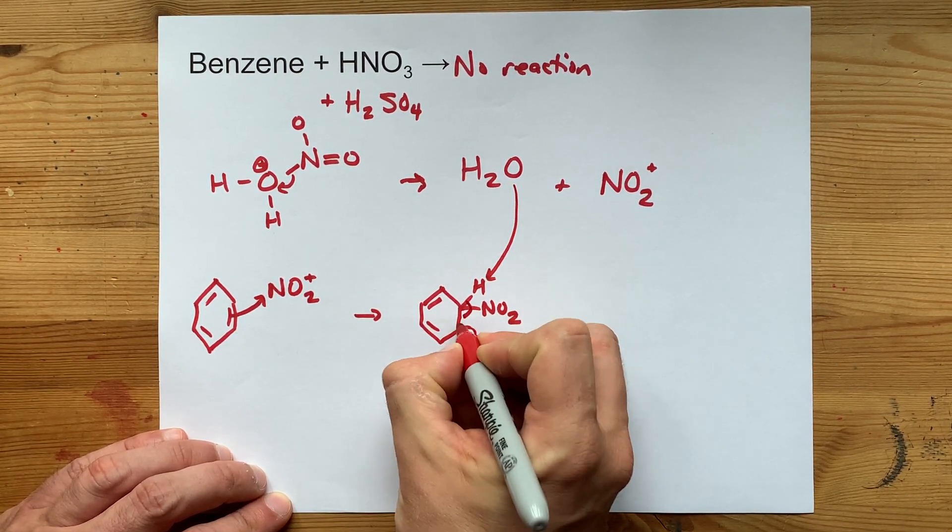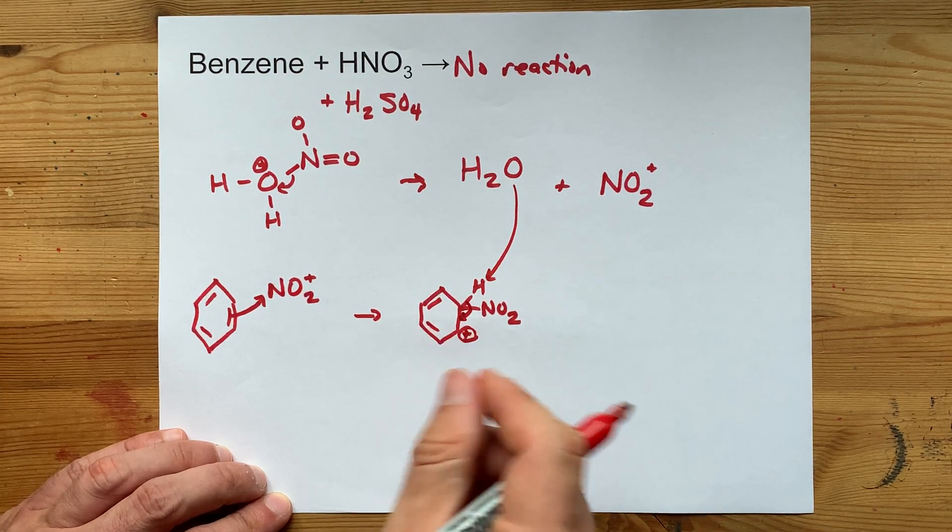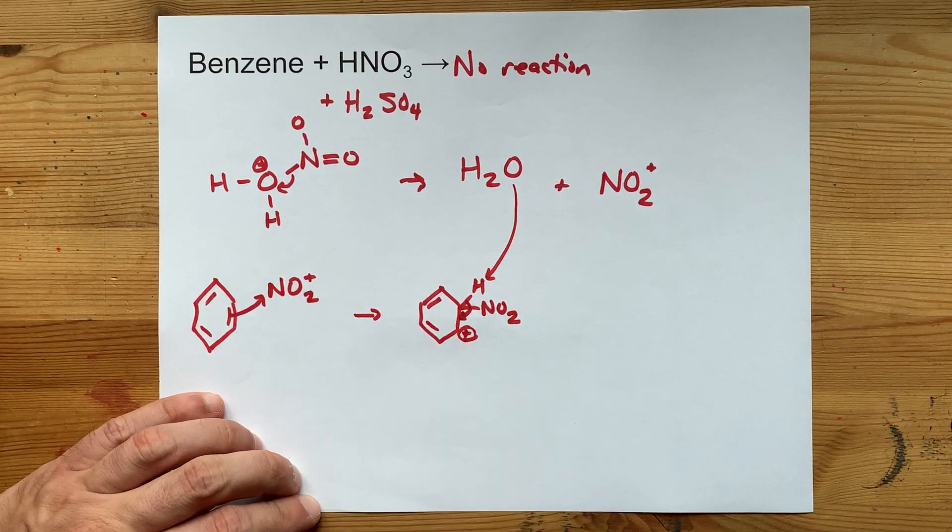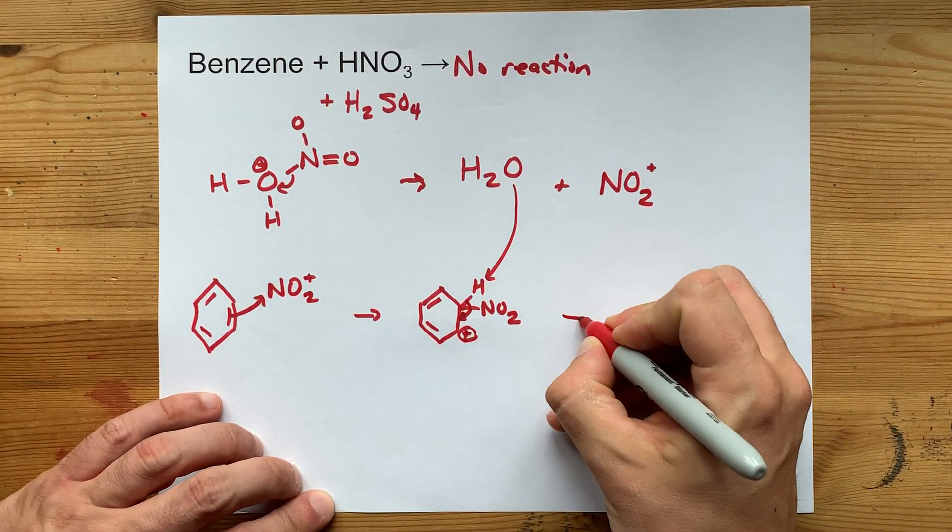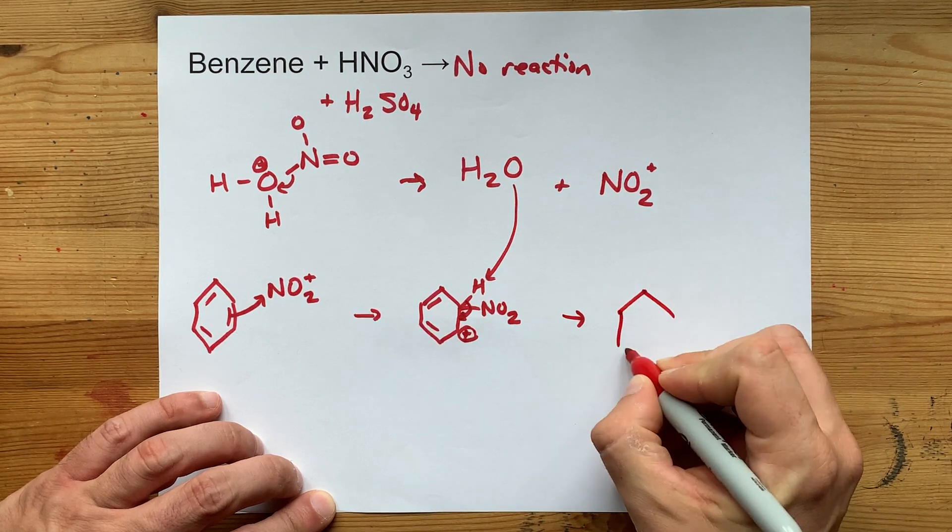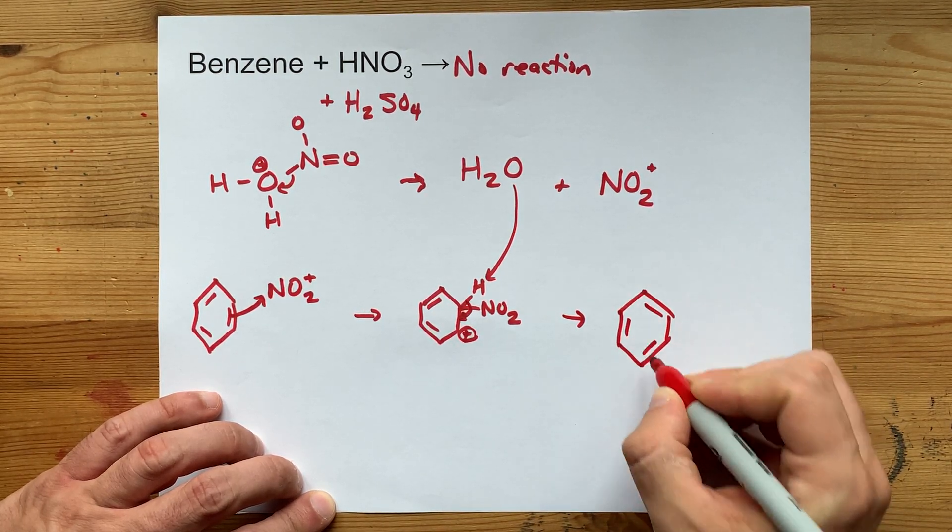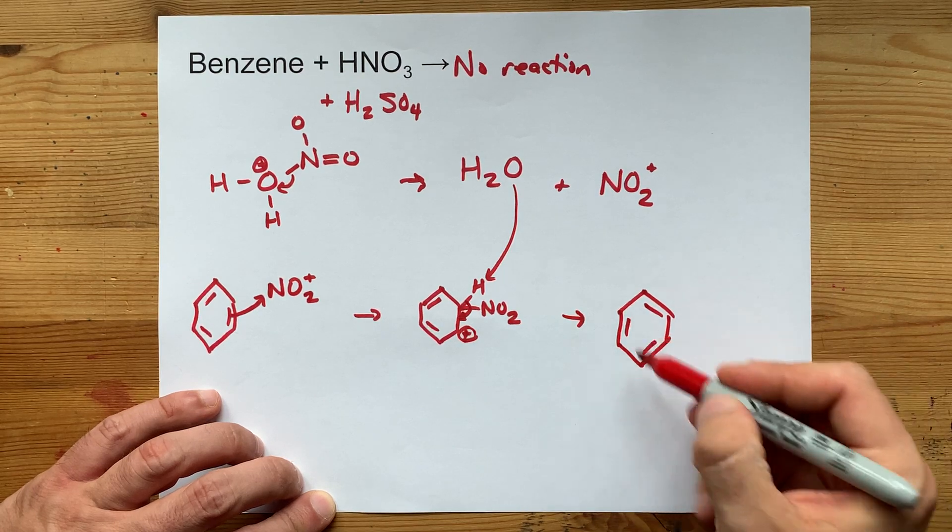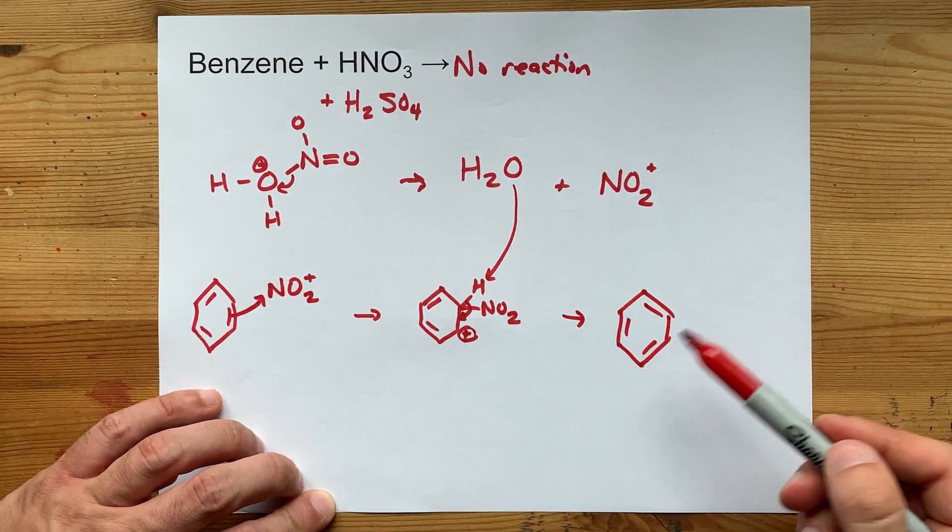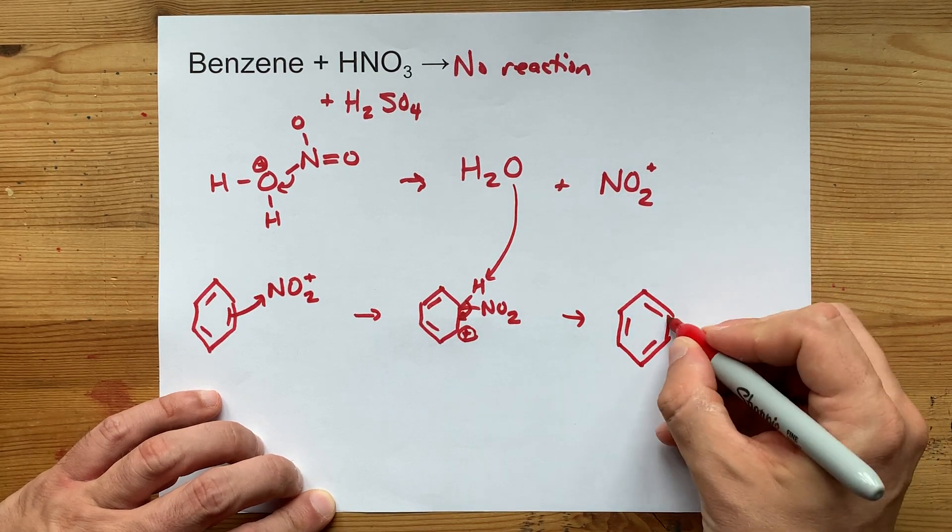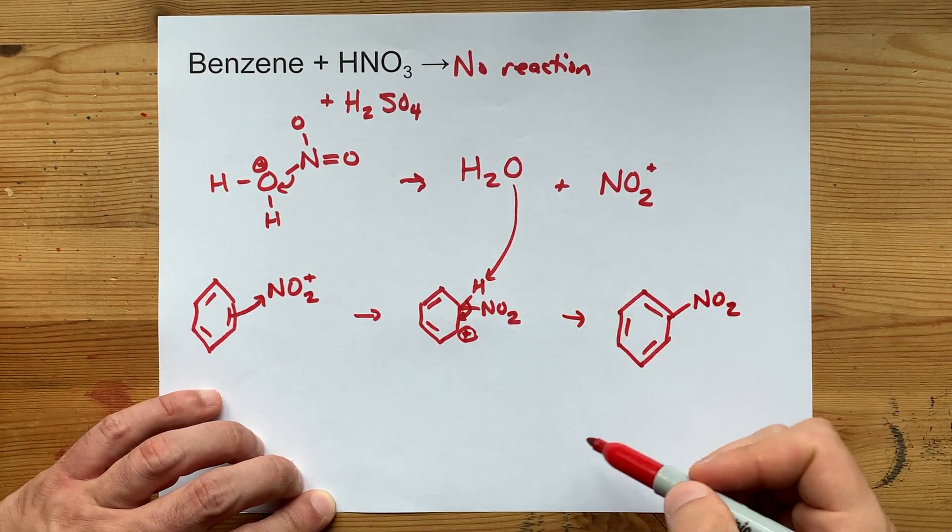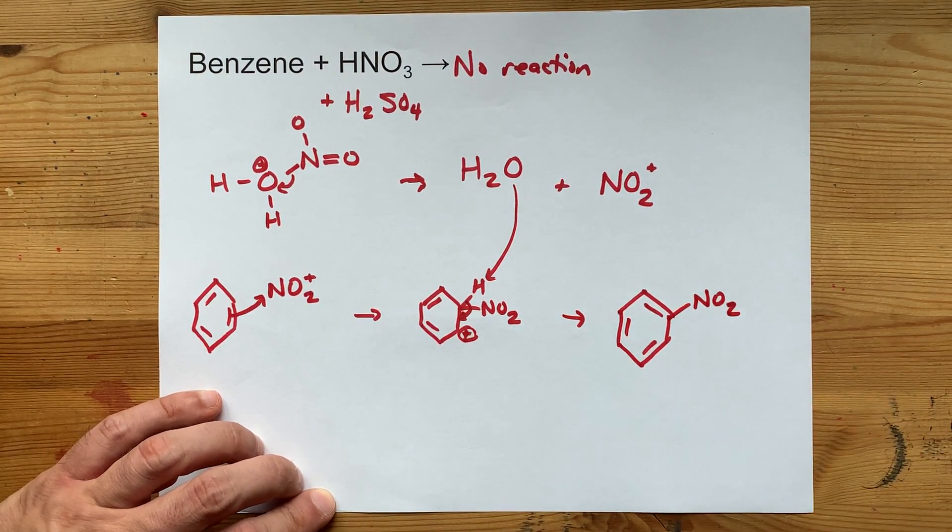Those electrons end up back where the double bond had been. That cures the positive one formal charge on that carbon. You end up with your benzene ring, which is now completely reformed. In fact, the delocalization means I'm allowed to switch where the double bonds are. With an NO2 on it instead, so you've replaced one of the H's with a nitro group.